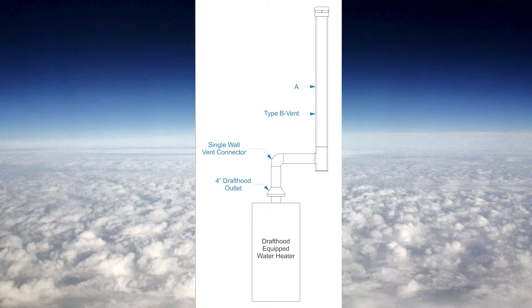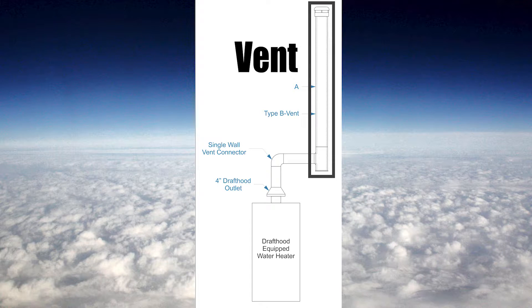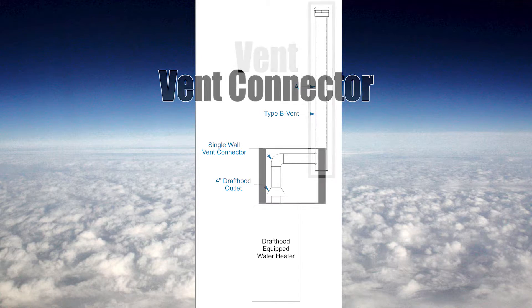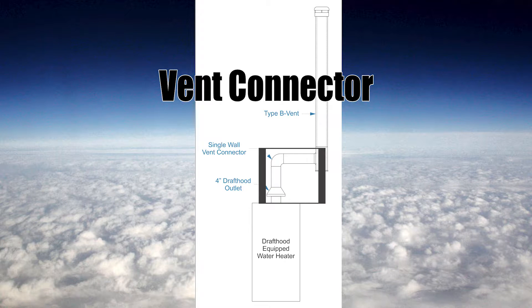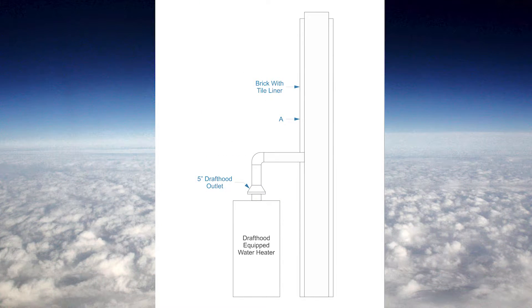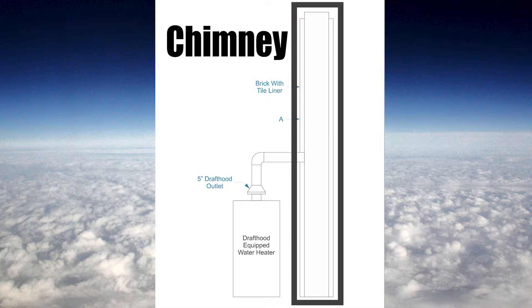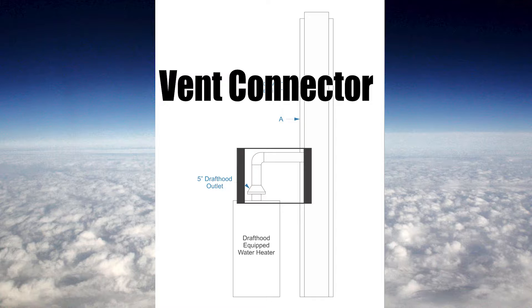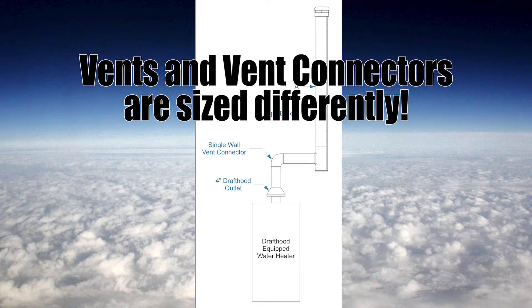Before we get into sizing we need to discuss one important thing: the difference between a vent and a vent connector. If we look at this picture here, the vent is the pipe that goes from this T all the way up through the roof. The vent connector is this horizontal piece that drops down to the appliance. With the chimney example, the chimney goes right from the ground up through the roof, and the vent connector is the piece of pipe that goes into the chimney and drops down over to the appliance. It's important to note the difference because they're sized differently.